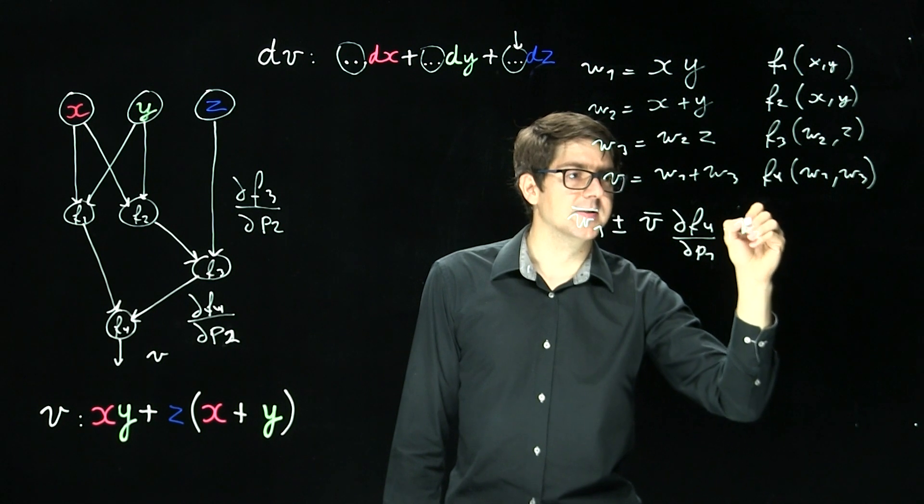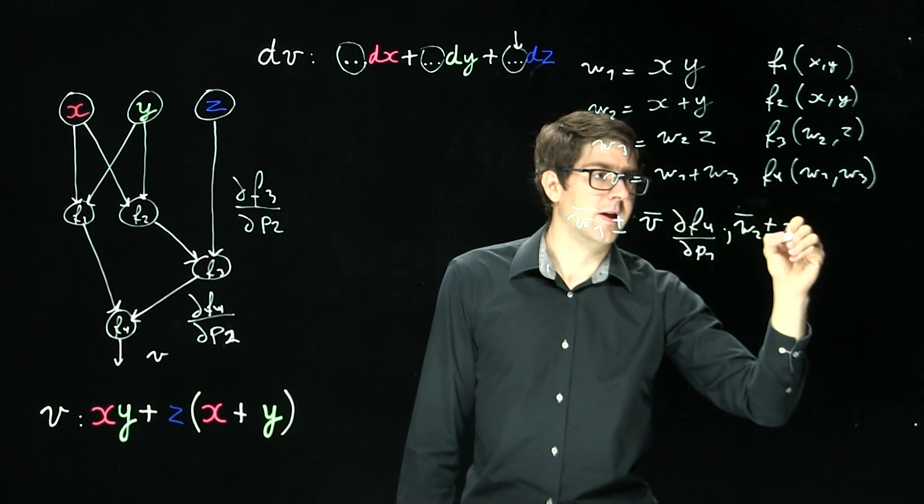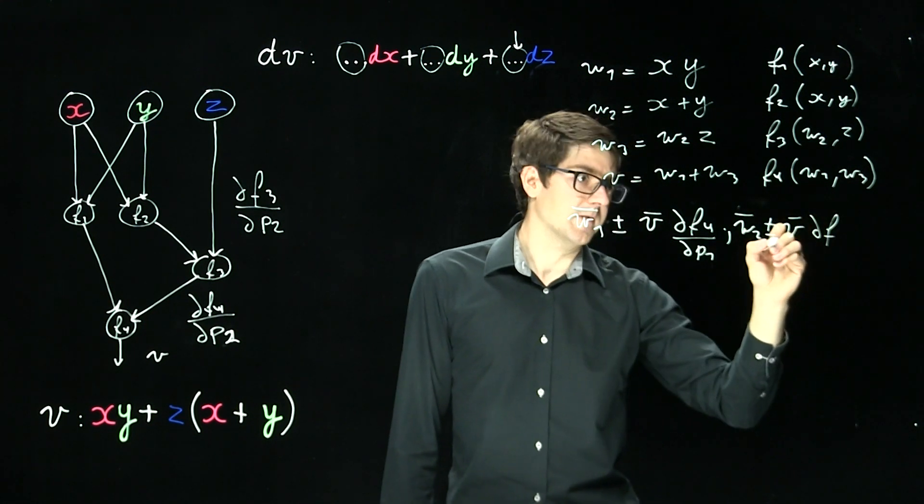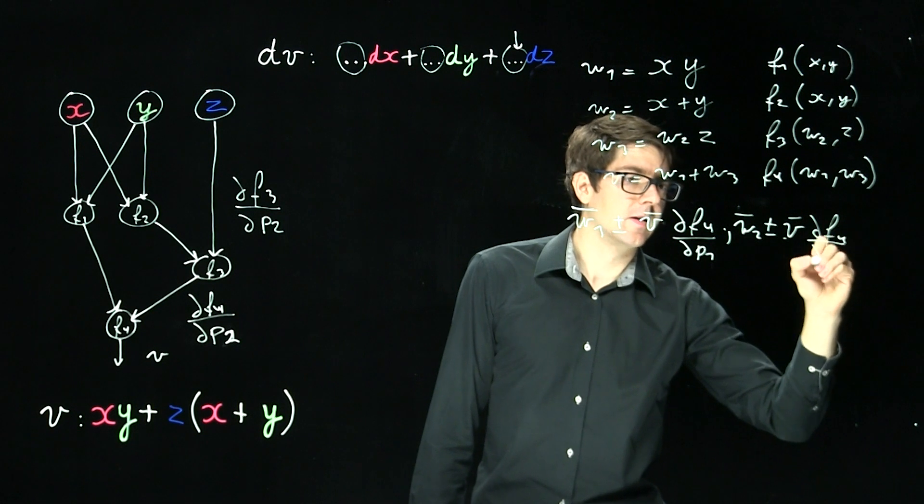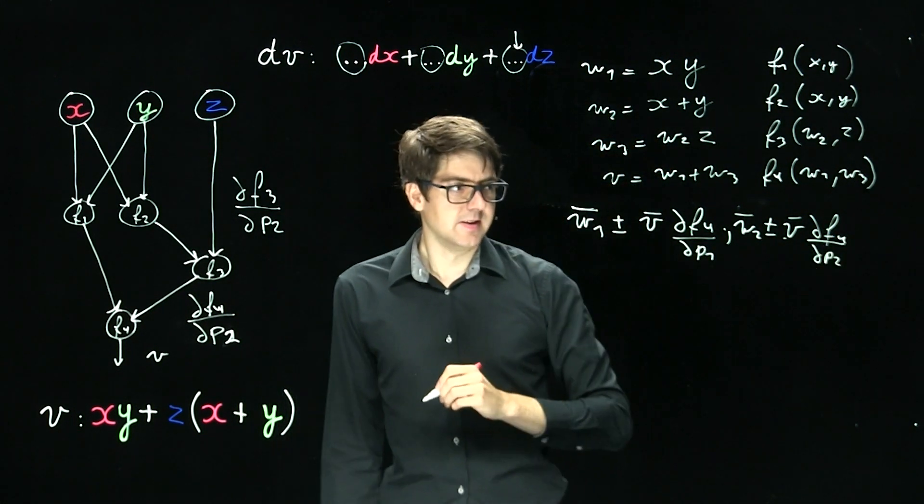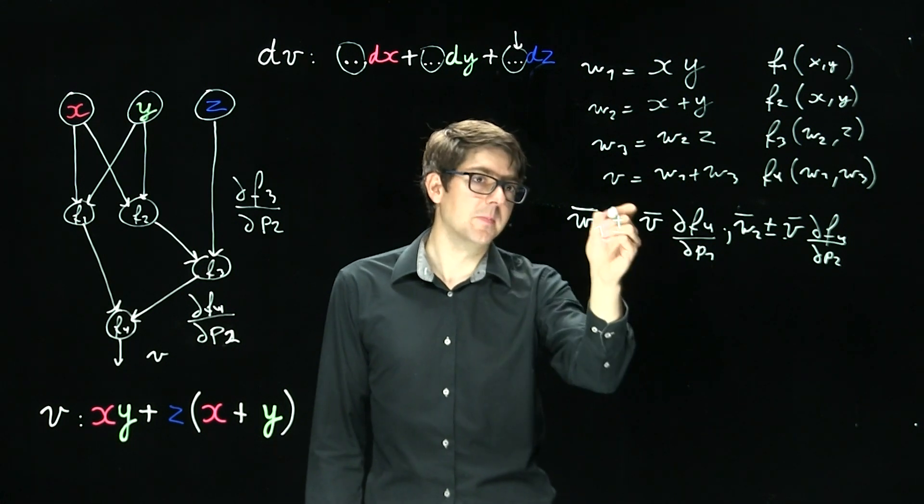What we're going to add to this is V bar times the partial of F4 with respect to P1. And we have another update to make and that is W3 bar plus equals the seed V coming in and the partial of F4 with respect to the second argument. So what does this all mean? I'm doing an update.